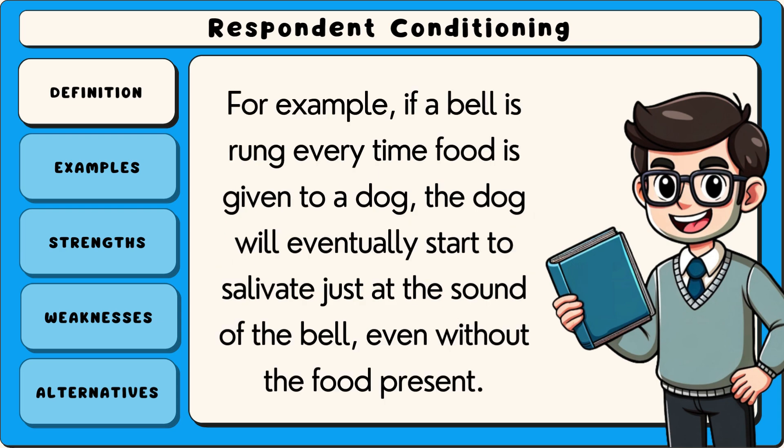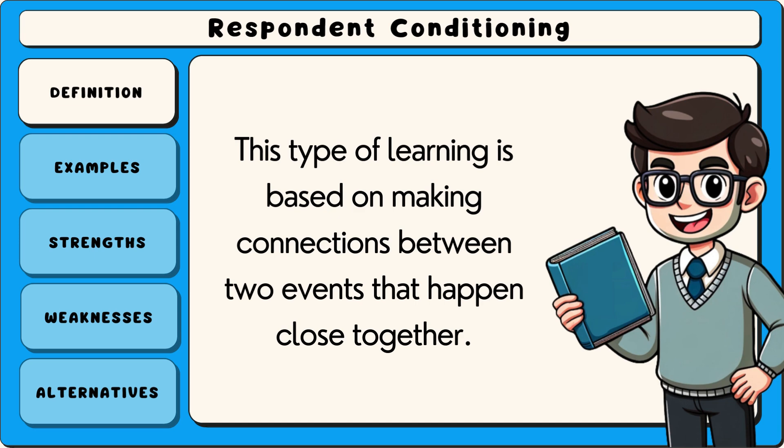For example, if a bell is rung every time food is given to a dog, the dog will eventually start to salivate just at the sound of the bell, even without the food present. This type of learning is based on making connections between two events that happen close together.